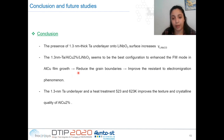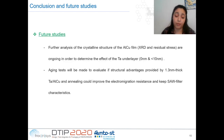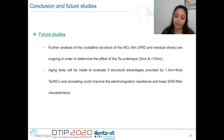For future studies, further analyses of the crystalline structure of the aluminium-copper films and residual stress analyses are ongoing in order to determine the effects of the tantalum underlayer. In the next stage of our work, we are planning to do aging tests to evaluate if the structural advantage provided by 1.3 nm of tantalum underlayer and the heat treatment could improve the electromigration resistance while keeping the SAW filter characteristics. Thank you for your attention.